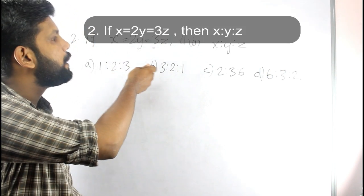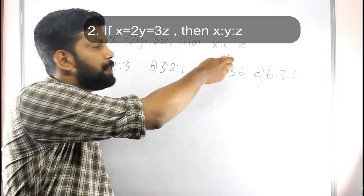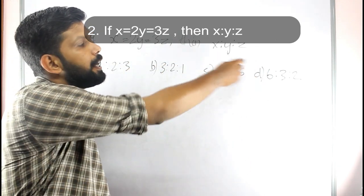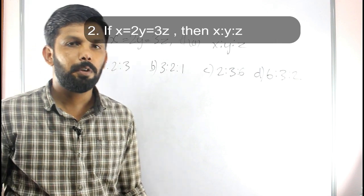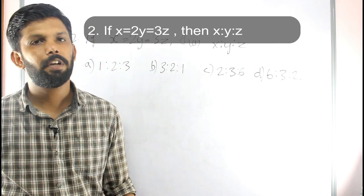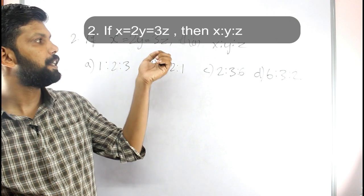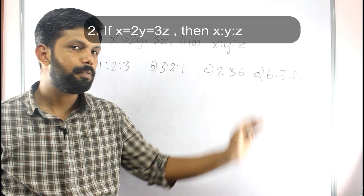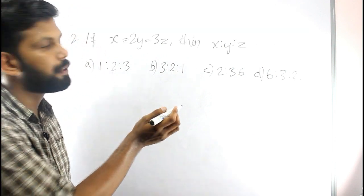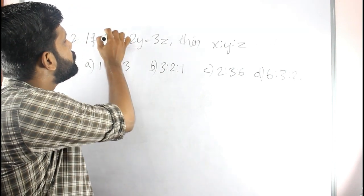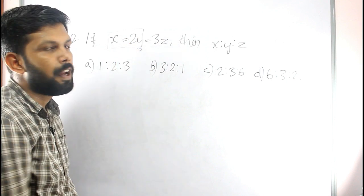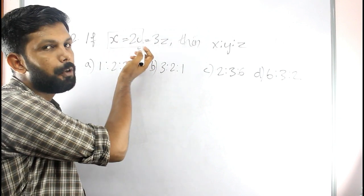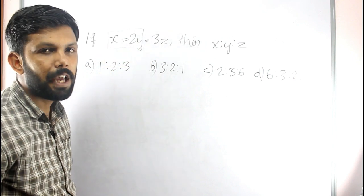The second question of the 2013 company board assistant exam was: if x is equal to 2y is equal to 3z, then find x to 2y to 2z. We are going to get the answer by checking the options. We have x equal to 2y, which means y is equal to x/2. So the answer comes from x equal to 2y, and there is one option.